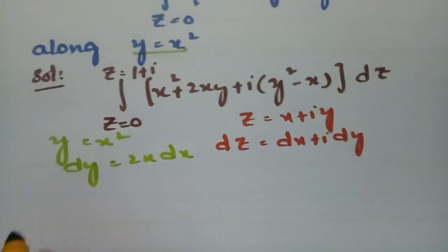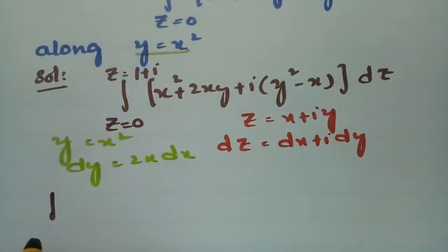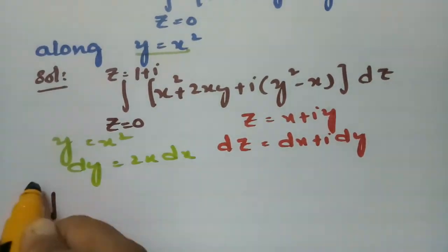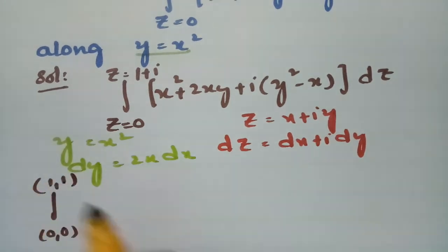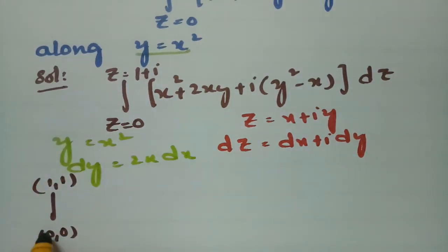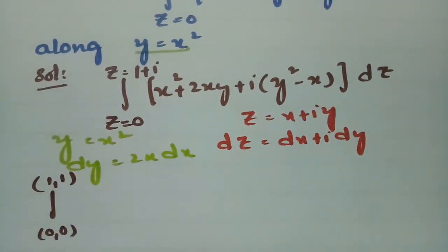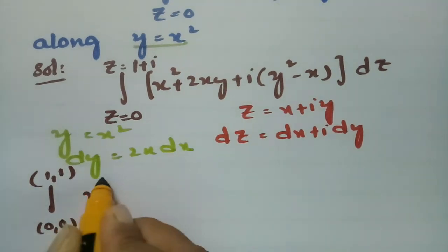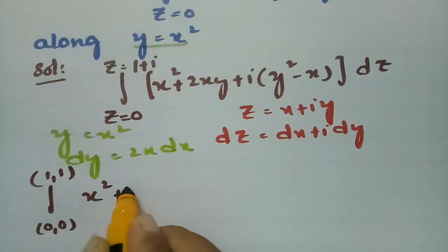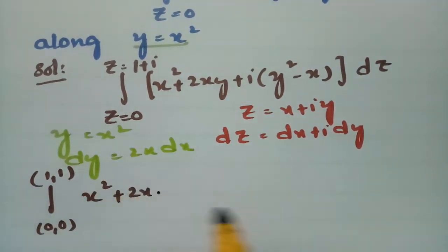Our limits correspond to points (0, 0) and (1, 1), so x limits are from 0 to 1 and y limits are from 0 to 1.